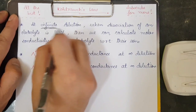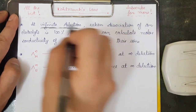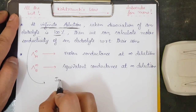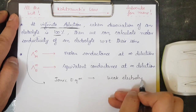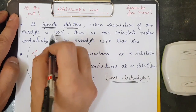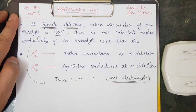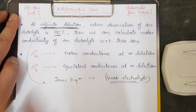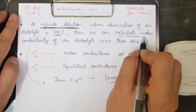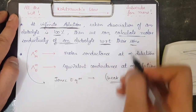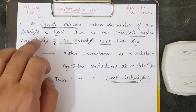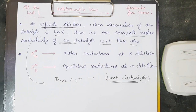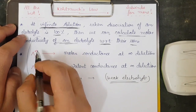At infinite dilution, the dissociation of an electrolyte is 100%. This concept comes from ionic equilibrium — even a weak electrolyte starts behaving as a strong electrolyte at infinite dilution. At infinite dilution, we can calculate the molar conductivity of an electrolyte with respect to their individual ions. We can dissociate the electrolyte, find out the ions, and then calculate the molar conductivity or equivalent conductivity from those ions.